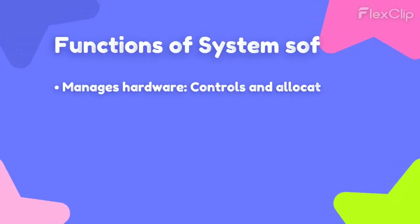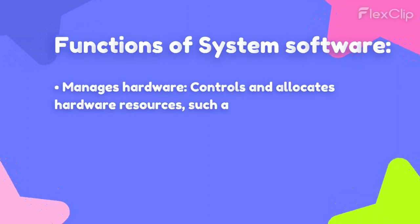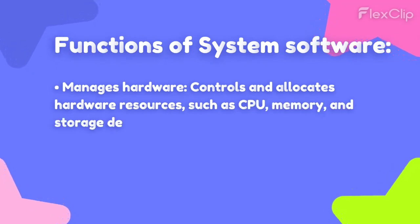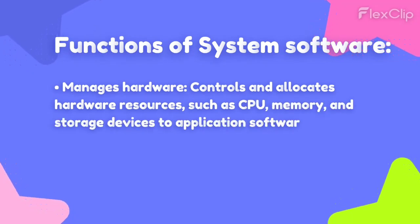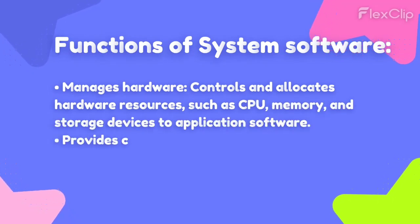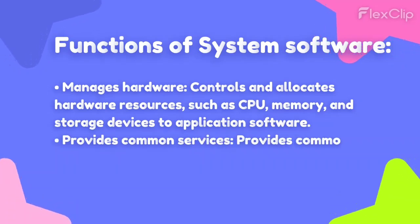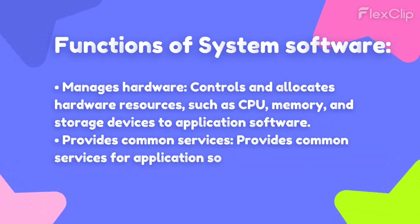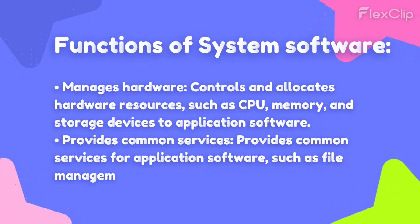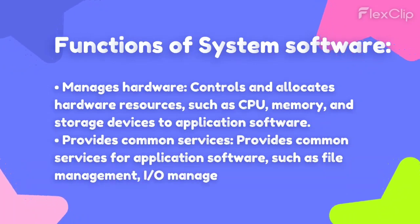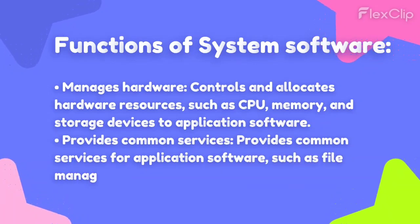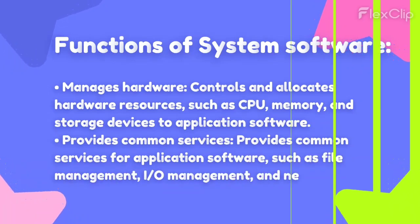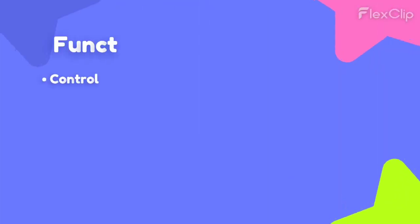Functions of Systems Software: Manages hardware — controls and allocates hardware resources such as CPU, memory, and storage devices to application software. Provides common services — provides common services for application software, such as file management, I/O management, and networking.